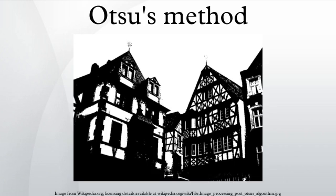In computer vision and image processing, Otsu's method is used to automatically perform clustering-based image thresholding, or the reduction of a gray-level image to a binary image. The algorithm assumes that the image contains two classes of pixels following a bimodal histogram. It then calculates the optimum threshold separating the two classes so that their combined spread is minimal. The extension of the original method to multi-level thresholding is referred to as the Multi-Otsu Method.